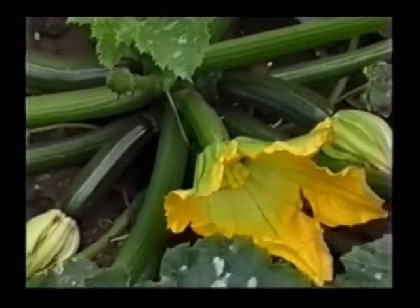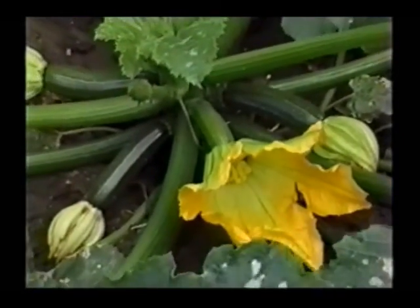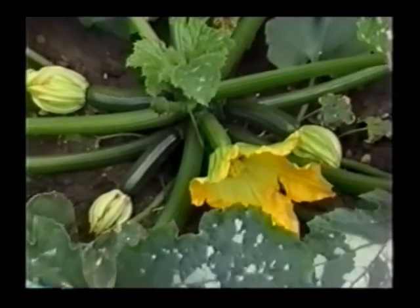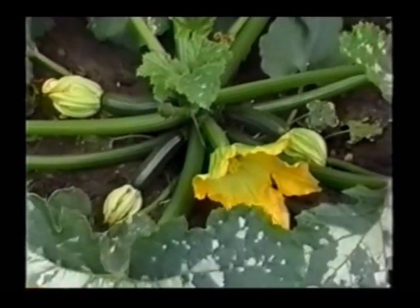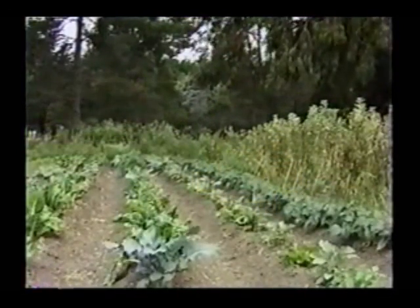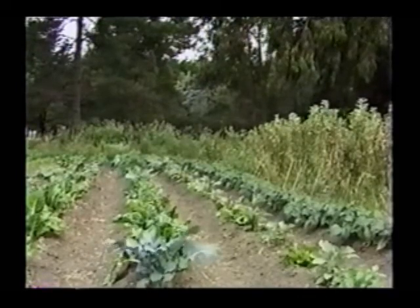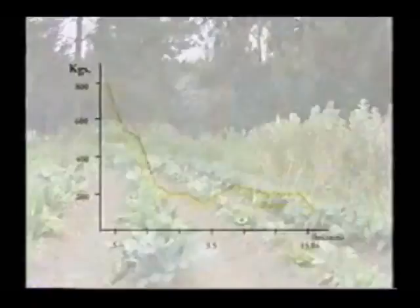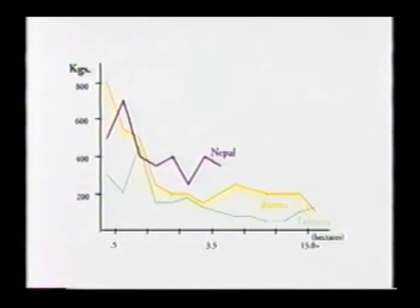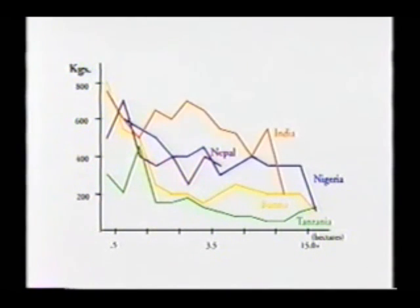Increasingly, scientists are recognizing the advantages of these diversified systems. Others, however, fear that they could lock agriculture into low levels of productivity. But evidence shows quite the contrary. In country after country, small farmers working anywhere from one-half hectare to seven hectares are in fact producing more per unit of land than the large-scale monocultures.